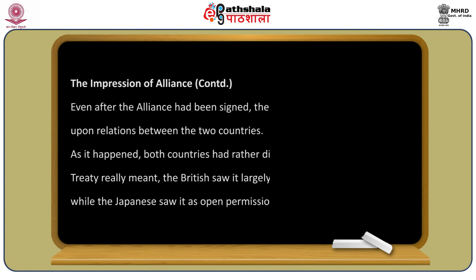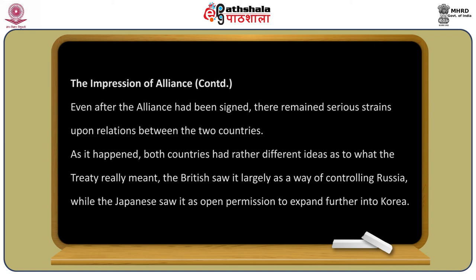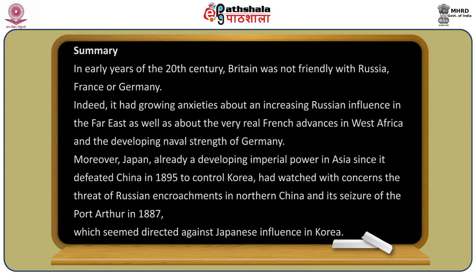Even after the alliance had been signed, there remained serious strains upon relations between the two countries. Both countries had rather different ideas about what the treaty really meant: the British saw it largely as a way of controlling Russia, while the Japanese saw it as open permission to expand further into Korea.